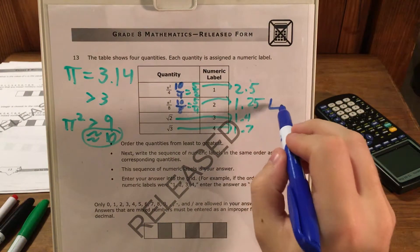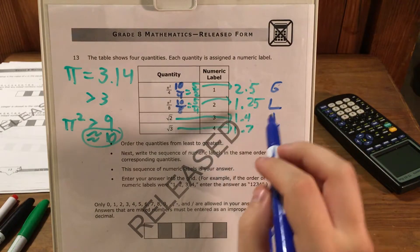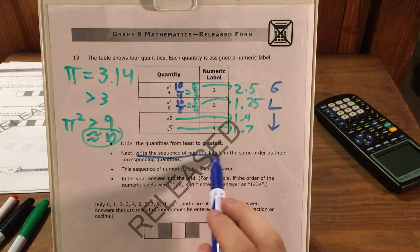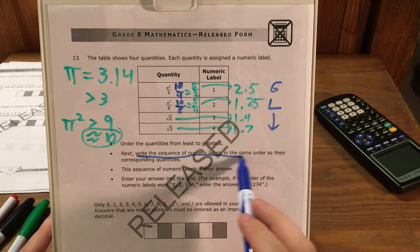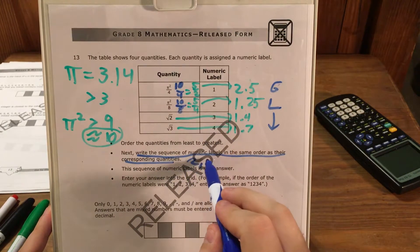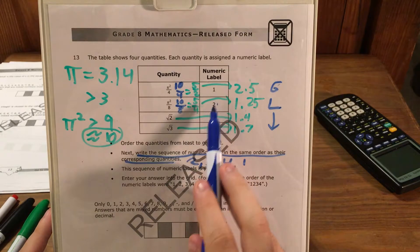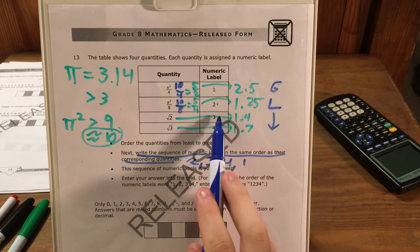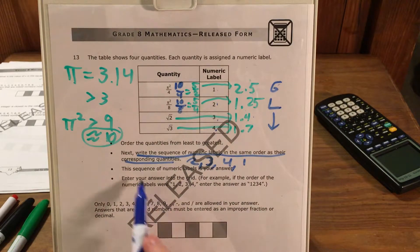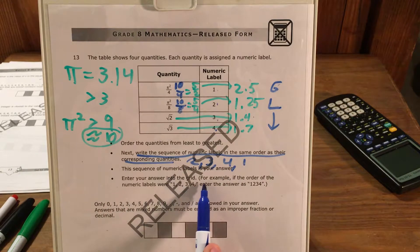This one is the least, this one's the greatest, and then our values go up from the least. So if I were to write the sequence of numeric labels in the same order as their corresponding quantities from least to greatest, it would be 2, 3, 4, and 1. Quantity 2 is the smallest, quantity 3 is next, quantity 4 is next, and quantity 1 is greatest. It says this sequence of numeric labels is your answer, and we need to enter our answer into the grid.